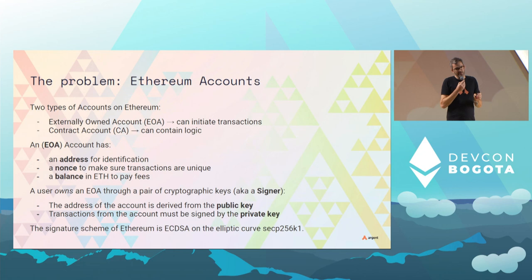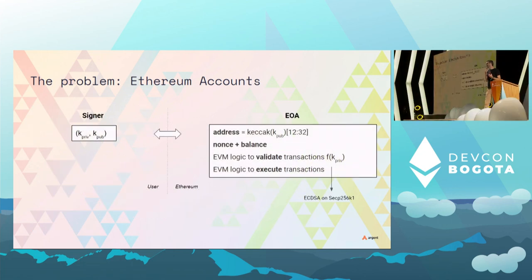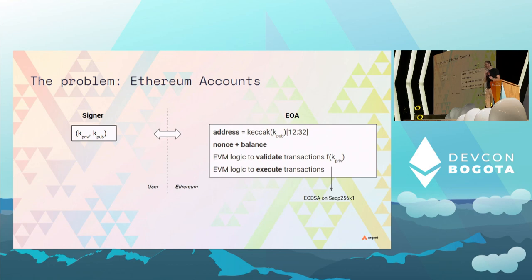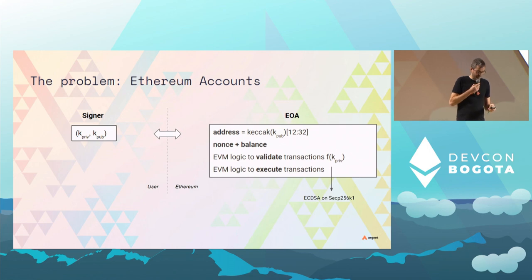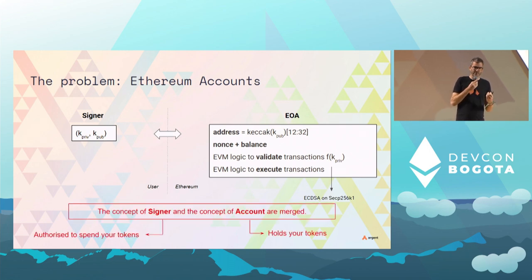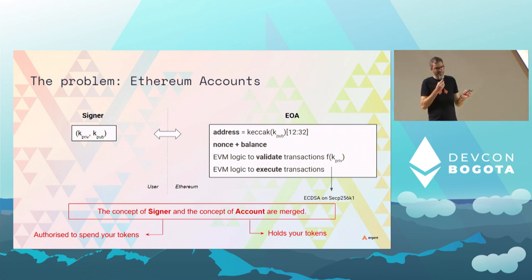On Ethereum, that link between signer and account is not random — we must use a very specific signature scheme called ECDSA on a specific elliptic curve, secp256k1. All of that logic is hard-coded in the EVM. So in the user space we have the signer and keeper, and on Ethereum we have the EOA with all the EVM logic to validate and execute transactions. There's a tight coupling between the two — they are basically two sides of the same coin.